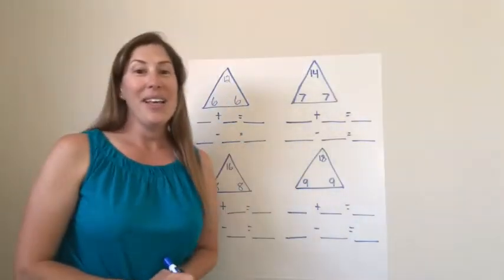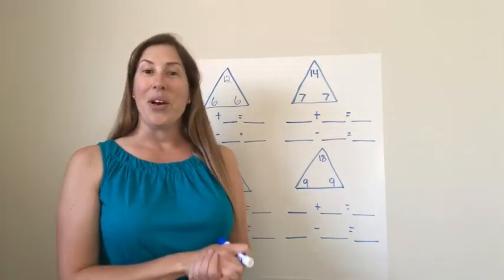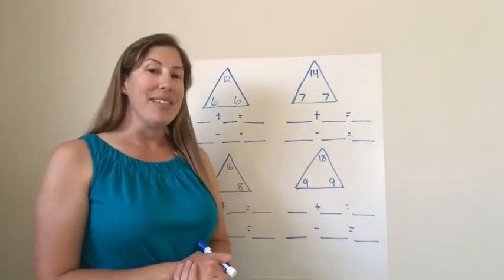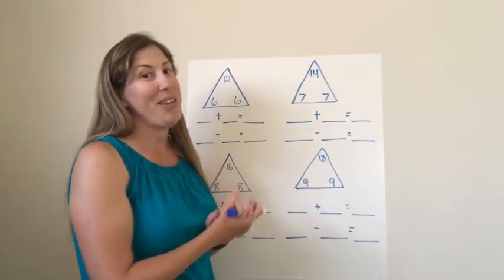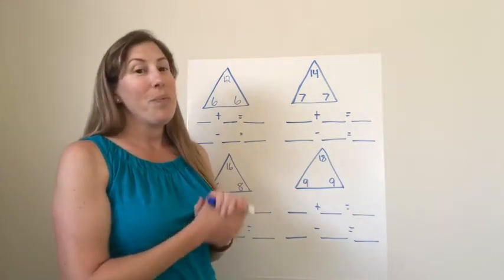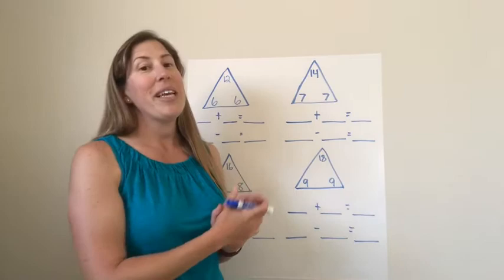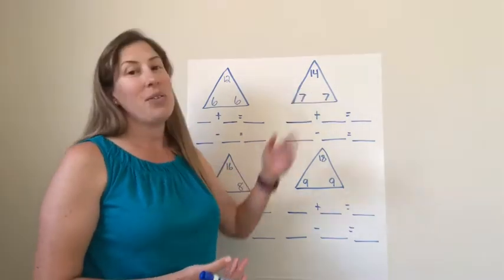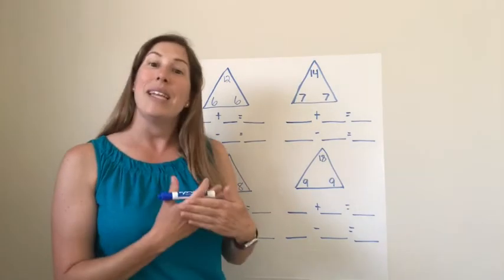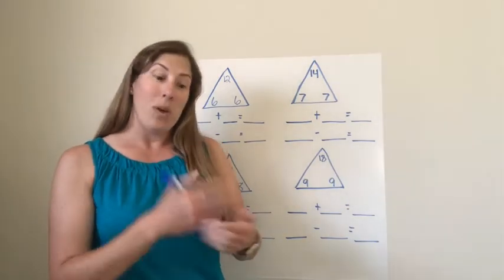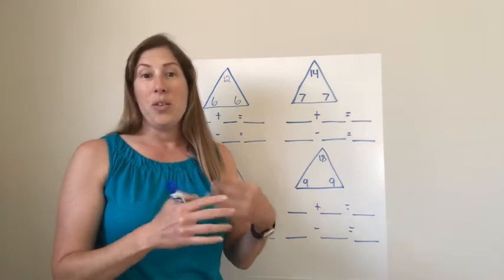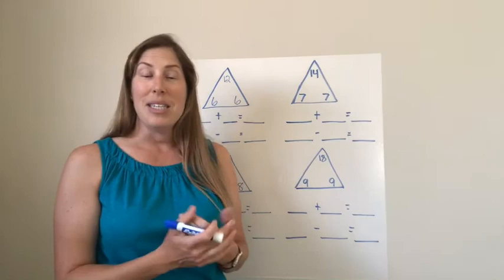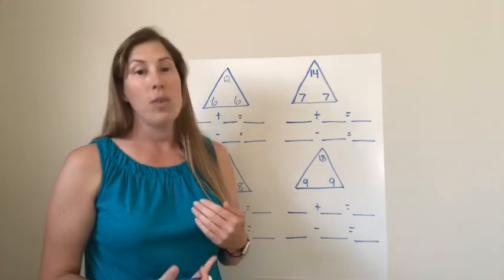All right. Here's another way of looking at what we were talking about using doubles to subtract. Earlier this year I introduced the idea of triangles with the numbers in them. And we use these to understand the relationship between numbers. So we knew that any of the three numbers that were in the triangle were related in some way. It was one of them was a whole and two others were parts. And so we were able to use them to create number sentences for both addition and for subtraction.